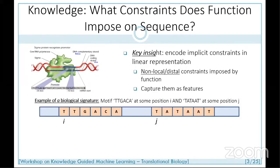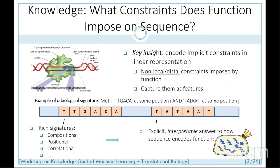We realized that because the RNA polymerase is a three-dimensional object, when it binds and recognizes a promoter region, it recognizes subsequences or motifs that are far away from each other in sequence — imposing non-local or distal constraints. So we constructed complex features, some demanding the presence of two motifs at different positions, which we called correlational features, in addition to the more common compositional and positional features. Our idea was to represent a promoter region as a bag of biological signatures able to discriminate it from non-promoter regions.